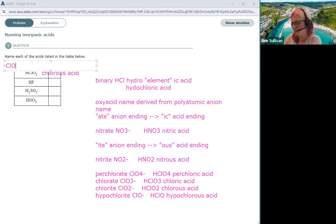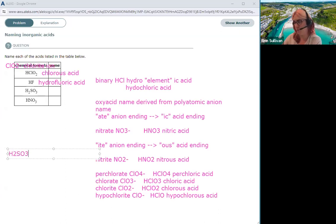HF will be hydrofluoric acid. H2SO3 would be sulfurous acid. Sulfuric acid is H2SO4, right? Because SO4 2 minus is the sulfate ion. So ate goes to ic, that would be sulfuric acid, so sulfurous acid.